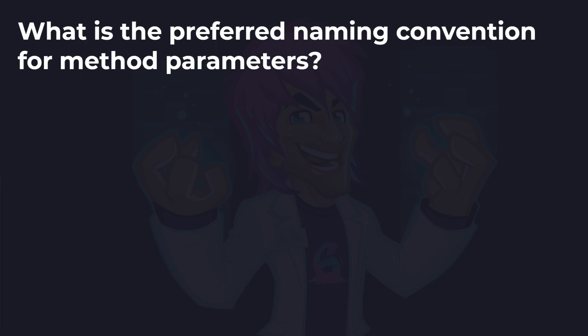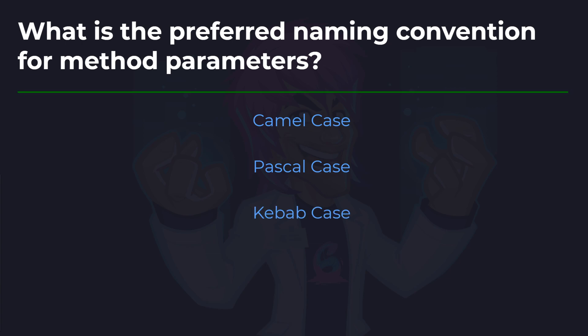Second to last question: what is the preferred naming convention for method parameters? So this is the name such as string fullName. Is it camel case, Pascal case, or kebab case? And the answer is camel case — where you start the first word with a lower case and then every subsequent word with an uppercase starting character. It's exactly the same as Pascal case, except the first word is lower case.